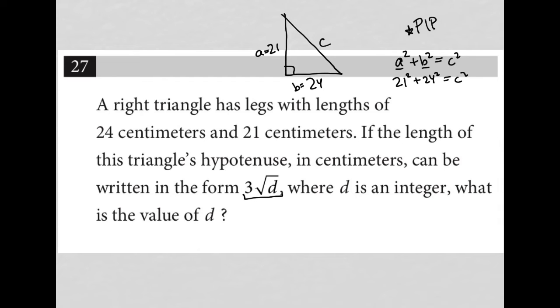So I'm going to have 21² + 24² = c². Go to my calculator. What is 21²? I'm getting 441. What is 24²? I'm getting 576, so equals c². 576 plus 441 is 1017, so 1017 = c².